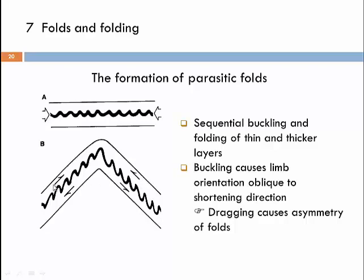Here we see a top-to-the-right sense of shear on one limb, and a top-to-the-left sense of shear on the other, because the limbs are differently oriented, and the horizontal shortening direction acts at a different angle onto these pre-existing initially symmetric folds.